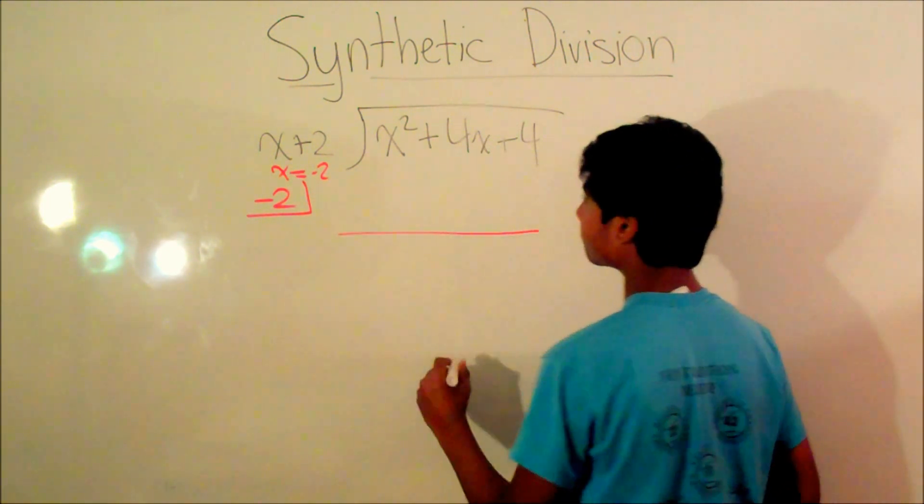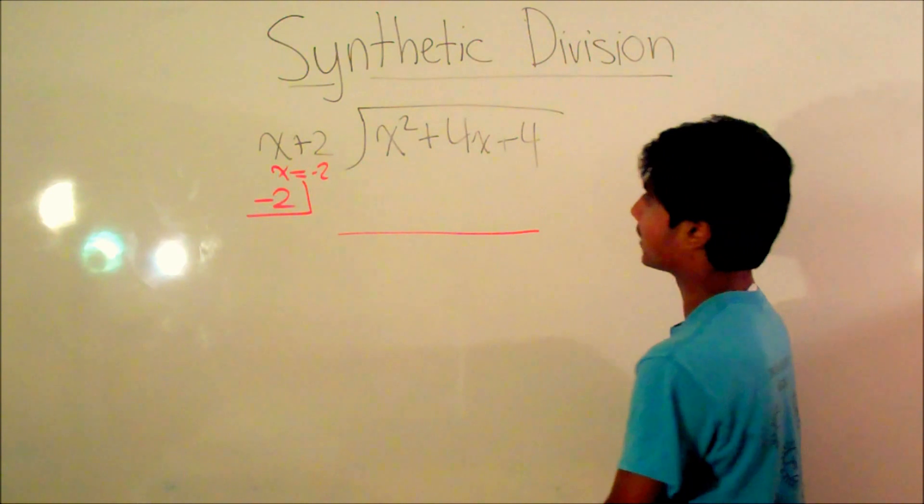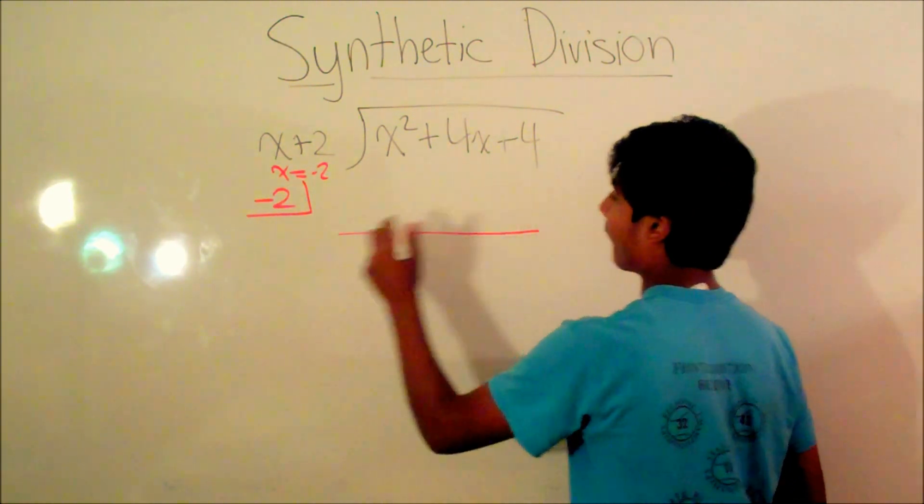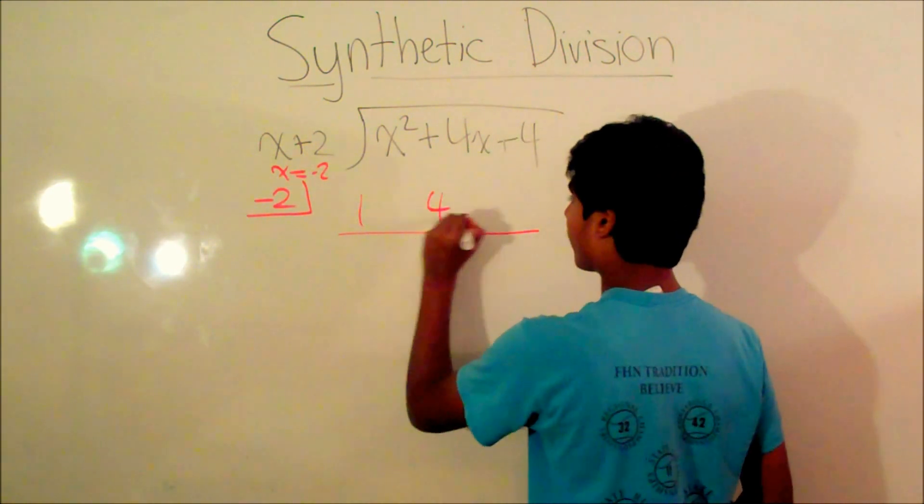Now we're going to put a line here. Now we're going to put all the coefficients. We have 1, 4, and 4. So it will be 1, 4, and 4.